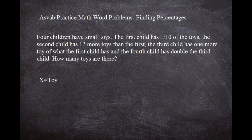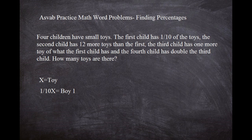Once we figure out what X is, it'll tell us how many toys there are — we get X equals a number, and that's what we're trying to hone in on. What I like to do is set up formulas for boy one, boy two, boy three, and boy four. If the first child has one tenth of the toys, then boy one is going to have one tenth X.